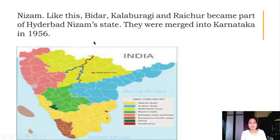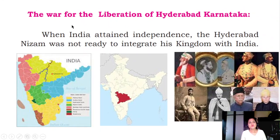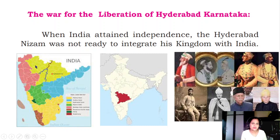The yellow highlighted part of the map shows the Hyderabad Nizam's dynasty, which ruled over a large part of Karnataka. They were merged into Karnataka in 1956 during the Karnataka integration - what we call Karnataka Eki Karana. The war of liberation of Hyderabad Karnataka followed, as many people fought for this liberation. When India attained independence, the Hyderabad Nizam was not ready to integrate his kingdom with India.